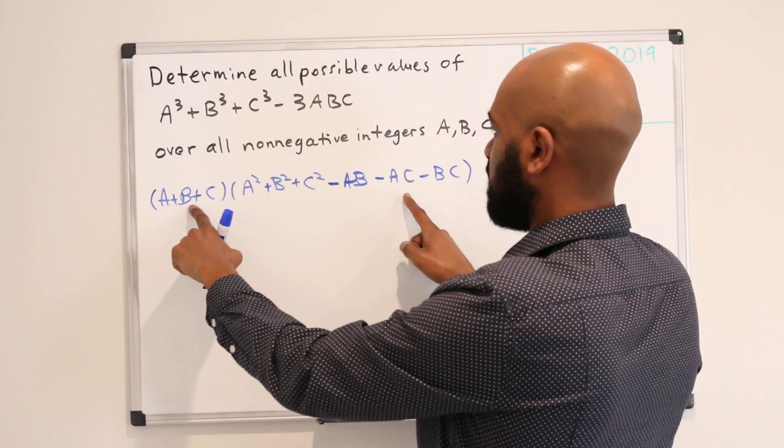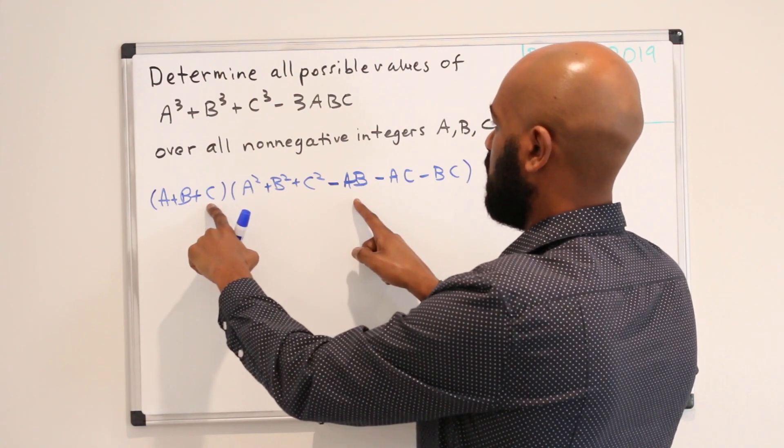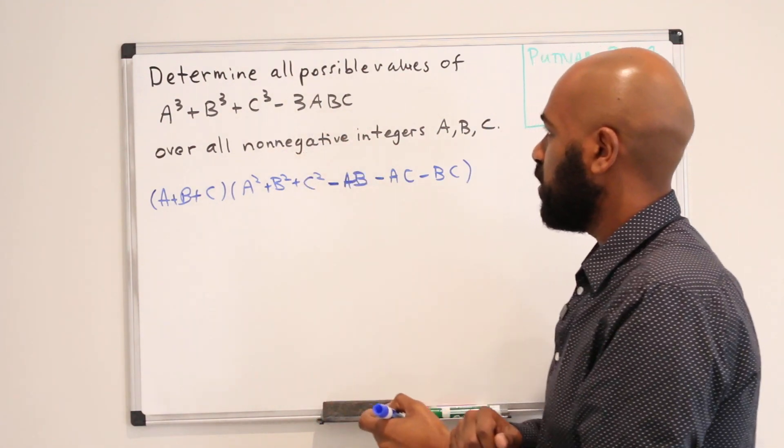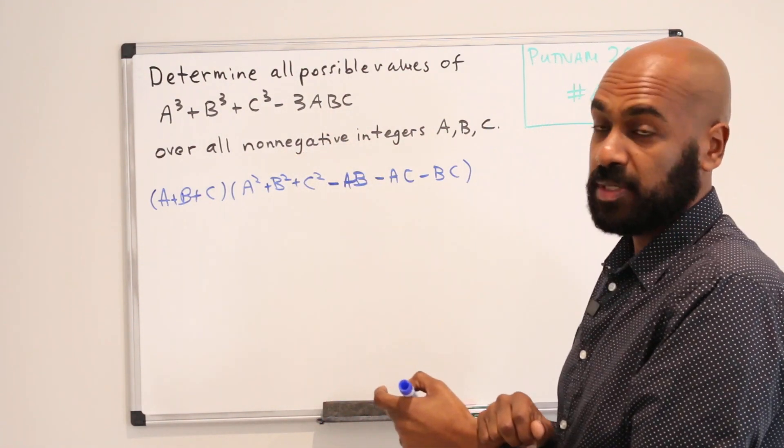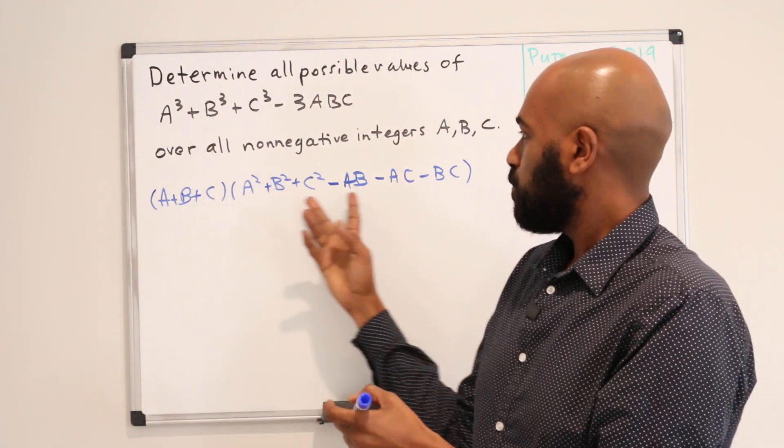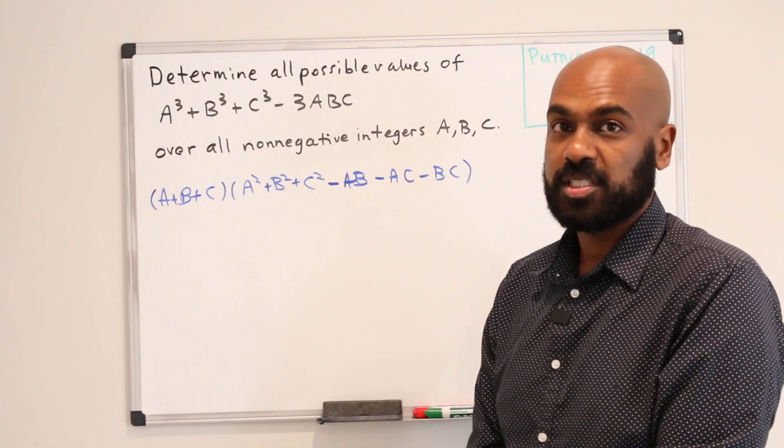All of these are negative ABC and so we get exactly this expression here negative 3ABC as the leftover. So this product is exactly this expression right here.